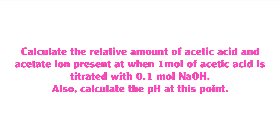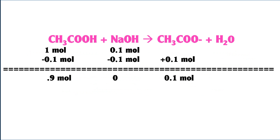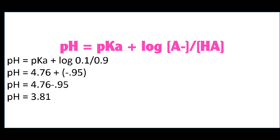Calculate the relative amounts of acetic acid and acetate ion when one mole of acetic acid is titrated with sodium hydroxide, using the Henderson-Hasselbalch equation. There is a one-to-one ratio of moles of acid reacted to moles of base added. When 0.1 mole of NaOH is added, it reacts to form 0.1 mole of acetate ion, leaving 0.9 moles of acetic acid — 90% acetic acid and 10% acetate ion. pH equals 4.76 plus the log of 0.1 over 0.9, which equals 4.76 minus 0.95, so pH equals 3.81.